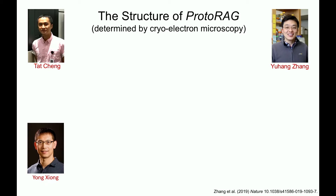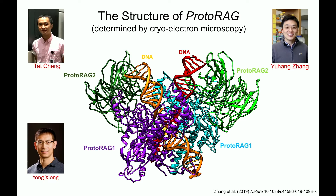We turned to cryo-electron microscopy to determine the molecular structure of the protein. It's shown here bound to two molecules of DNA in orange and red, running through the heart of the protein complex. The proto-RAG1 subunits — there are two of them in purple and light blue — and two subunits of proto-RAG2. The structure was beautiful and elegant, with wonderful rich details. One of those was that it was incredibly similar to the structure of RAG1 and RAG2, which is amazing because these enzymes have been diverging from one another for 700 million years and yet still show strong structural similarity.